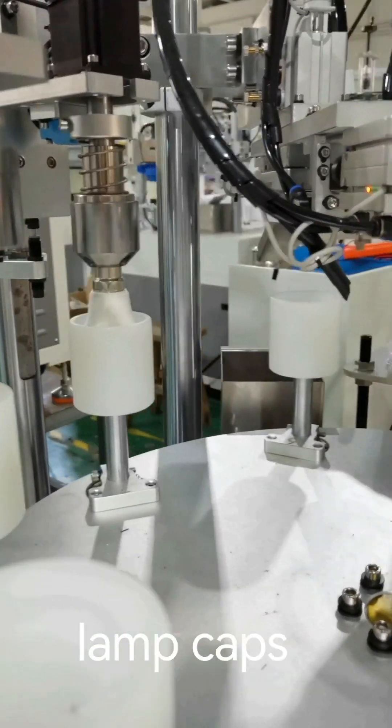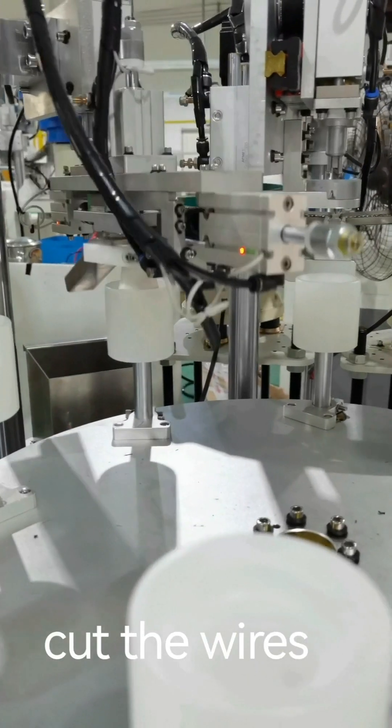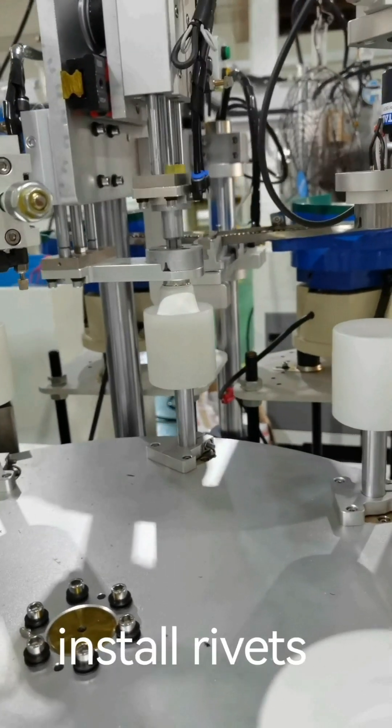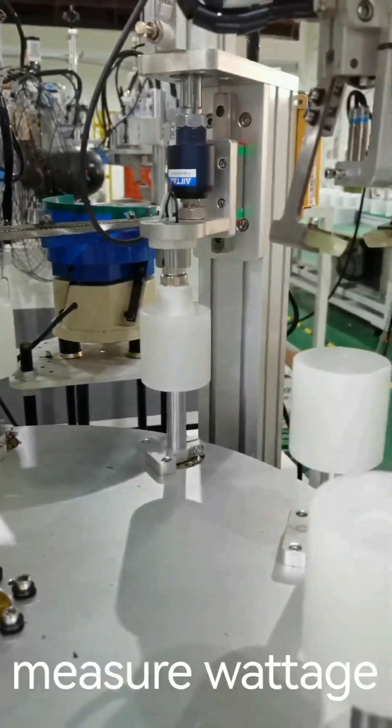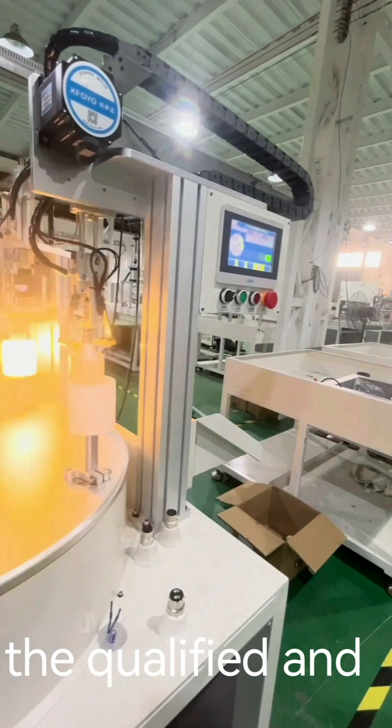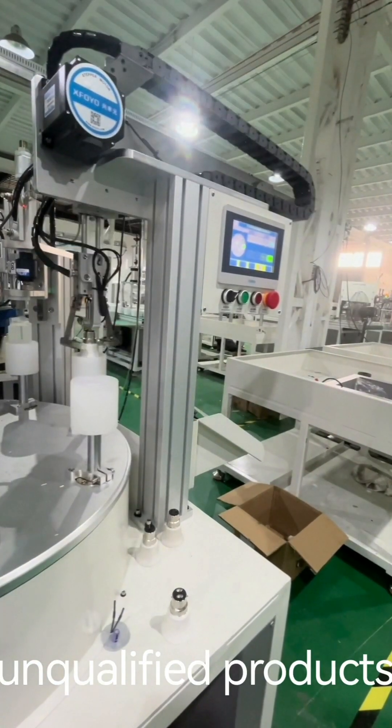Fix lamp cap. Calibrate to the direction of lamp caps. Cut the wires. Install ribbons. Machine will automatically unload and separate the qualified and unqualified products.